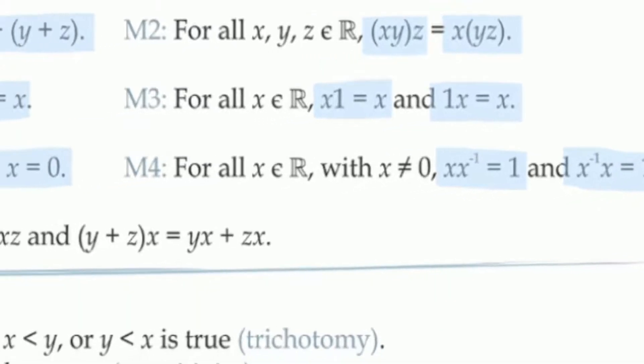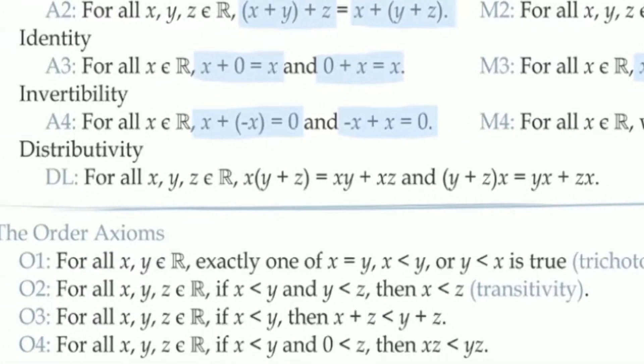Finally, the ninth field axiom tells us about the interaction between our two binary operations, addition and multiplication. It tells us that multiplication distributes over addition. In other words, if we want to multiply x by a sum, y plus z, we get the same thing as if we had multiplied x by y and z individually at the start, and then added the results.